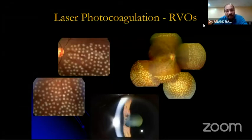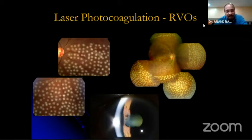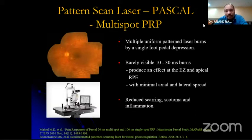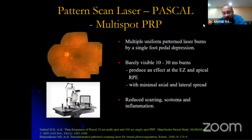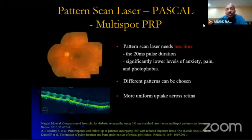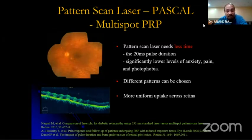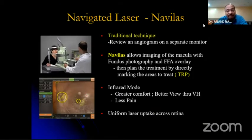Laser photocoagulation is also indicated for retinal vascular occlusions — sector photocoagulation for BRVOs, complete PRP for retinal vascular occlusions with retinal neovascularization or anterior segment neovascularization such as rubeosis. Pattern scan laser or PASCAL delivers multi-spot PRP with single foot pedal depression — barely visible 10 to 30 millisecond burns producing an effect on the ellipsoid zone and the RPE with minimal axial and lateral spread. There is reduced scarring, scotoma, and inflammation, plus significantly lower patient anxiety, pain, and photophobia. Navigated laser also allows imaging of the macula with fundus photography and FFA overlay, enabling selective targeting of ischemic areas.